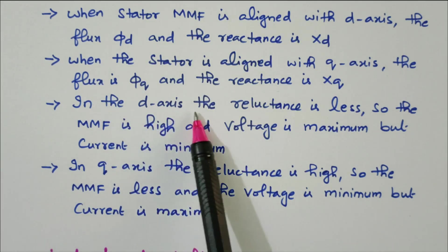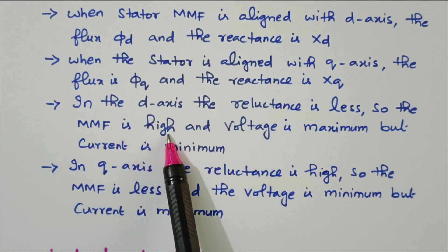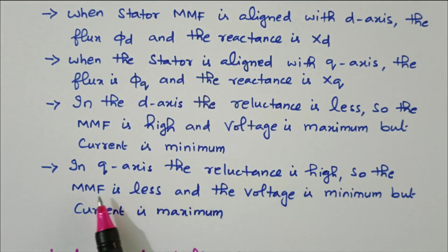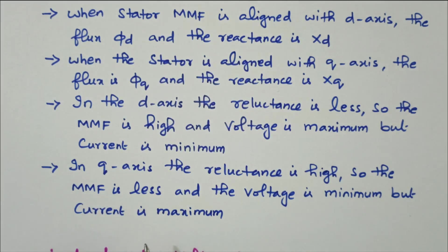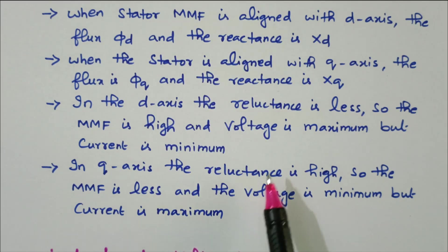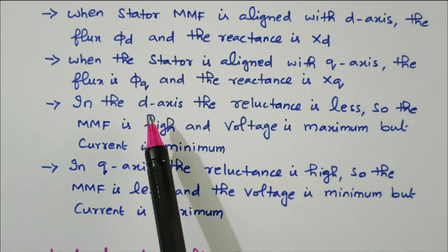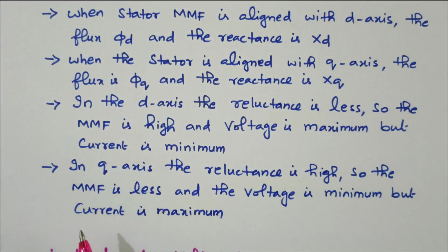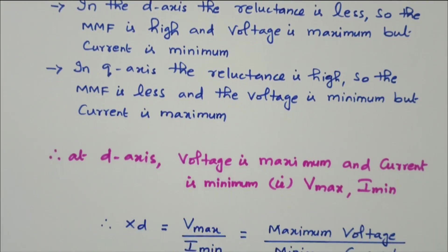In the d-axis, reluctance is less and MMF is high. In the q-axis, the reluctance is high so the MMF is less, voltage is minimum, and current is maximum. These two conditions — maximum voltage with minimum current for d-axis, and minimum voltage with maximum current for q-axis — allow us to find the Xd and Xq parameters.